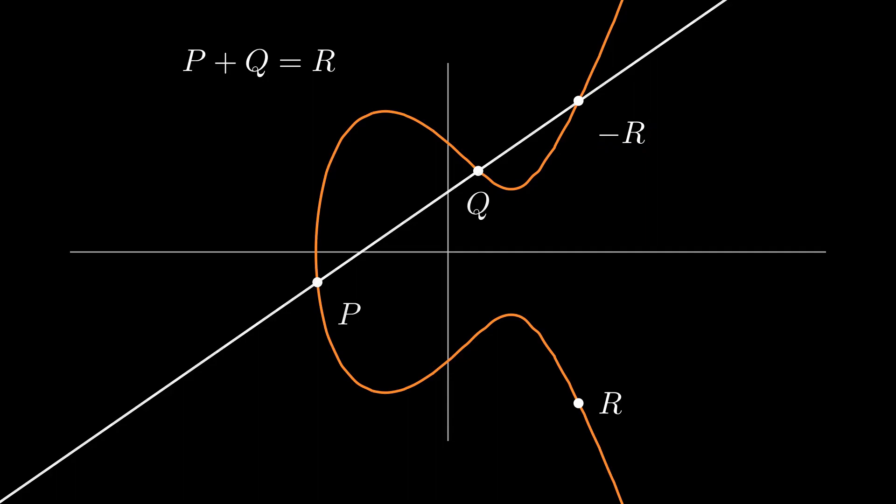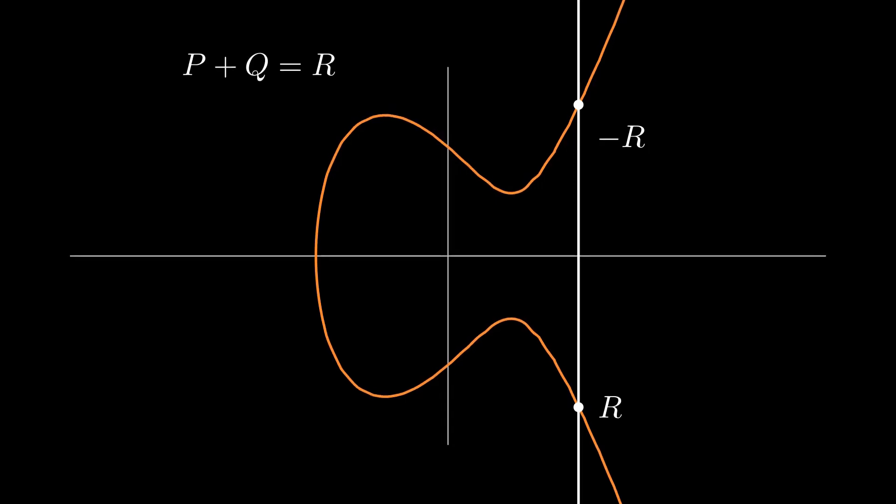Why do we denote the reflected point as negative? Well, consider drawing a line through r and negative r. We can follow the line up until the curve, so we're forced to consider this non-existent point way over at infinity as the identity element of the group of points on our elliptic curve. But it makes sense to do this. When we add a number and its negation, we get zero.